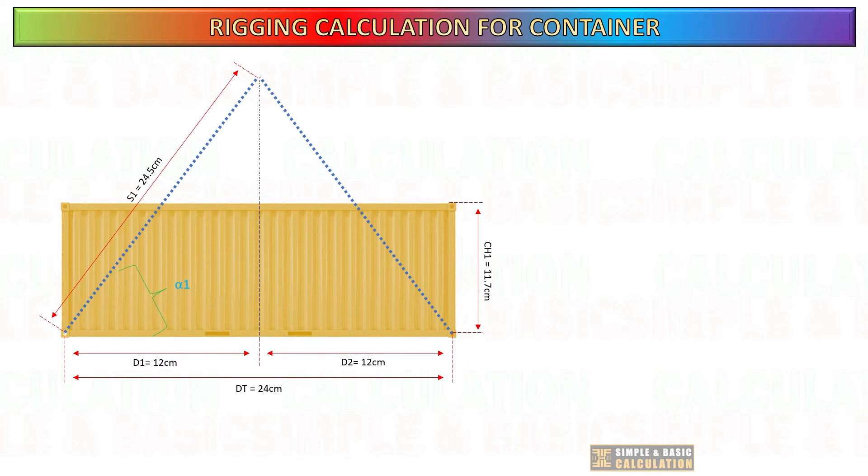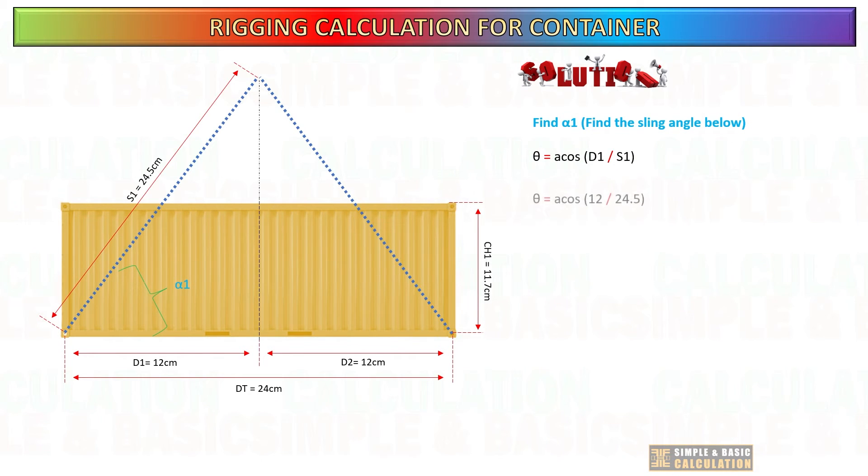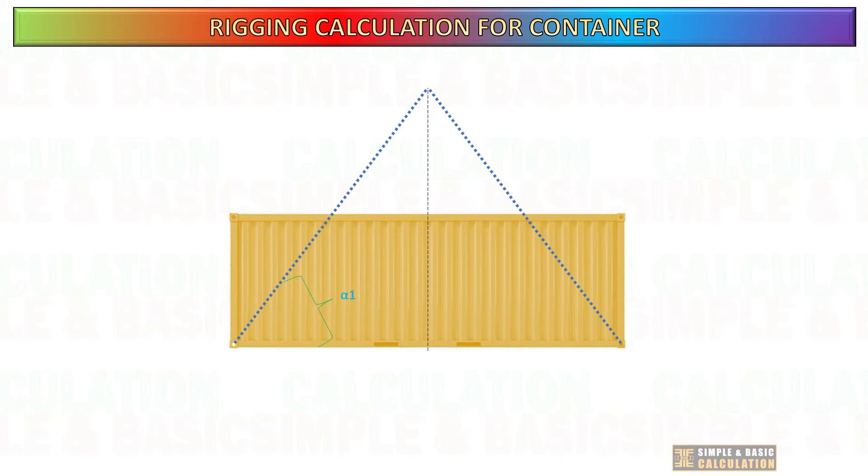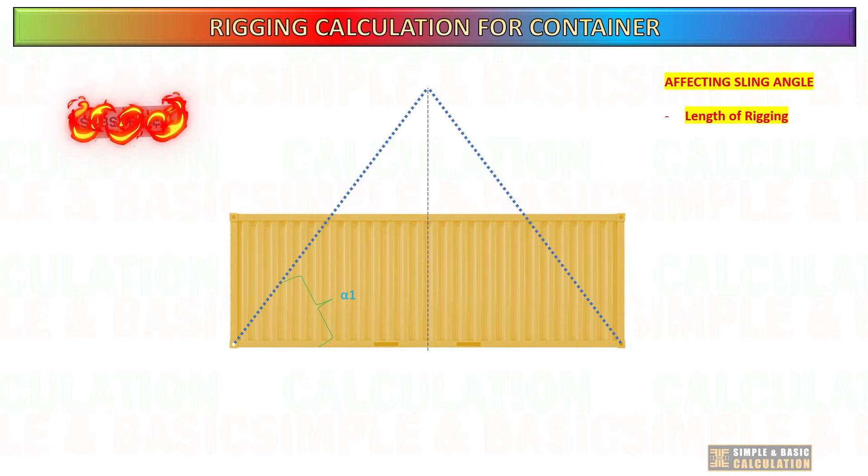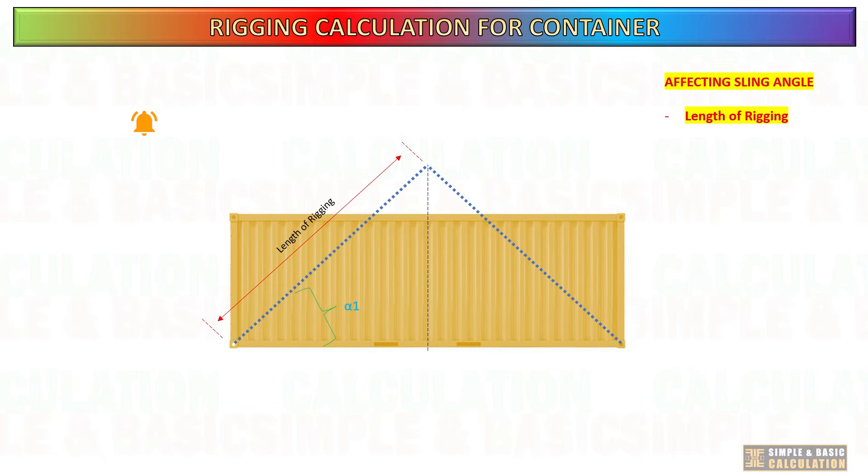Now, let's begin the calculation. Determine the angle of the sling at the bottom, as shown in the slide. To determine the sling angle, divide the length of the sling, d1 to s1, and multiply it by the arccosine function. The length of the lifting gear is an essential component that affects the sling angle. A shorter length of rigging reduces the angle of the sling, whereas a longer sling increases the sling angle.